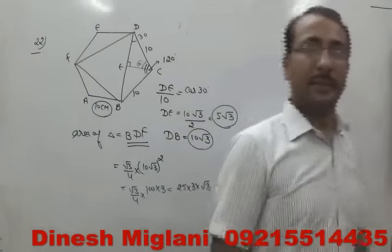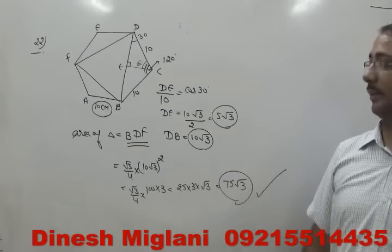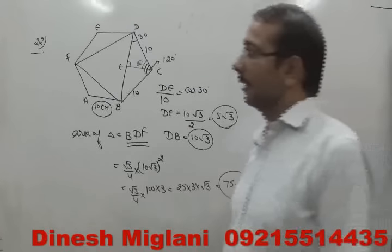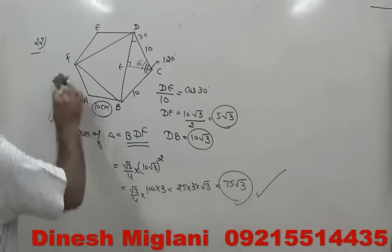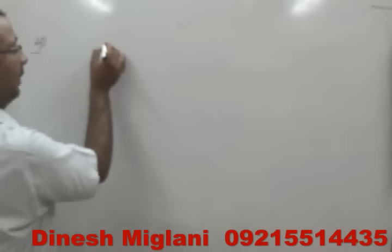Concept number 26: a square inscribed in a semicircle differently — one vertex at the center, two on the diameter, and one on the arc. Let the side be a. The diagonal from center to the arc-corner equals a√2, and this equals the radius 10. So a√2 = 10, giving a = 10/√2. The side of the square is 10/√2.